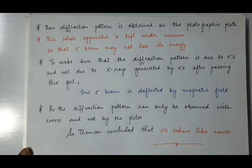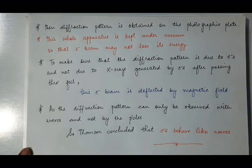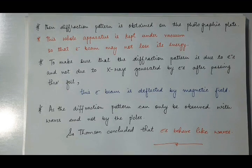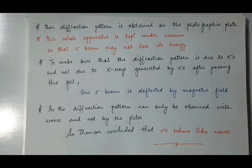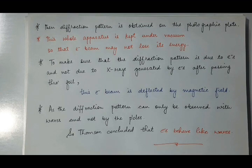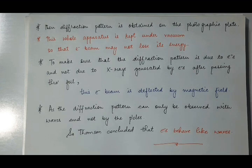So Thomson concluded that electrons behave like waves, because in this diffraction pattern we observed concentric rings in the same way as the X-ray diffraction pattern. This was all about the GP Thomson experiment, which also confirmed the existence of de Broglie waves associated with the motion of a material particle.